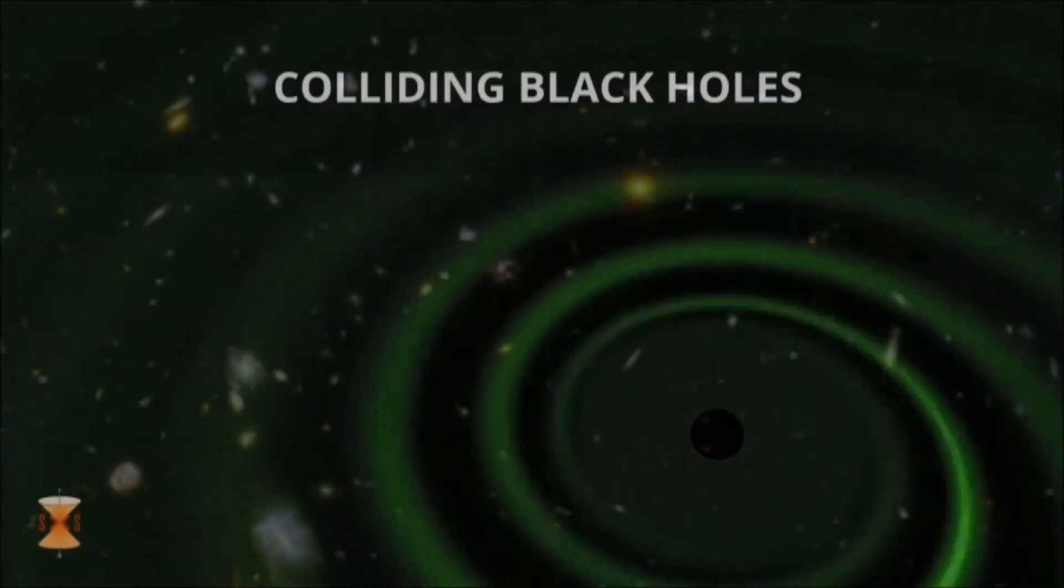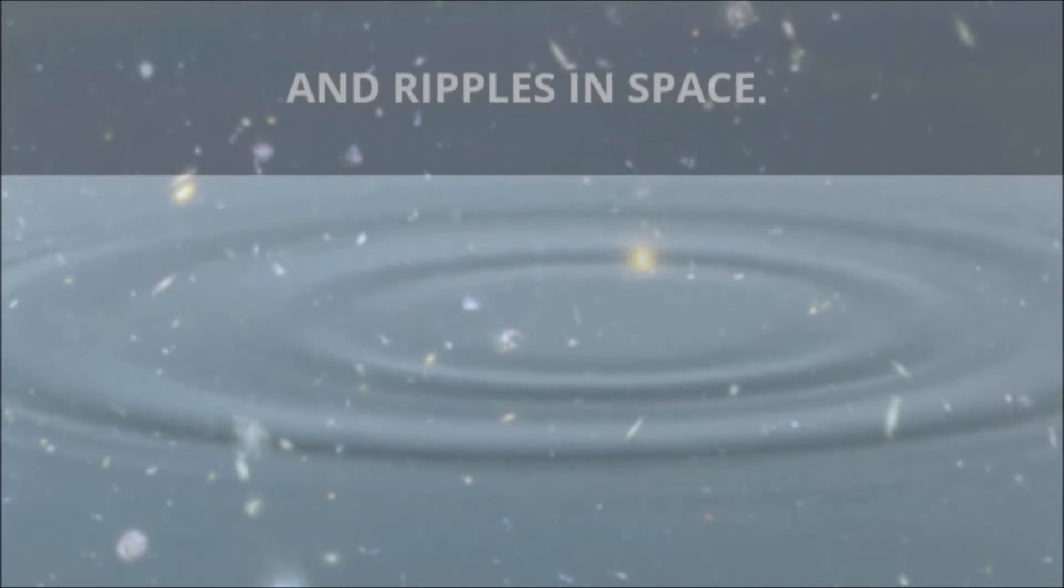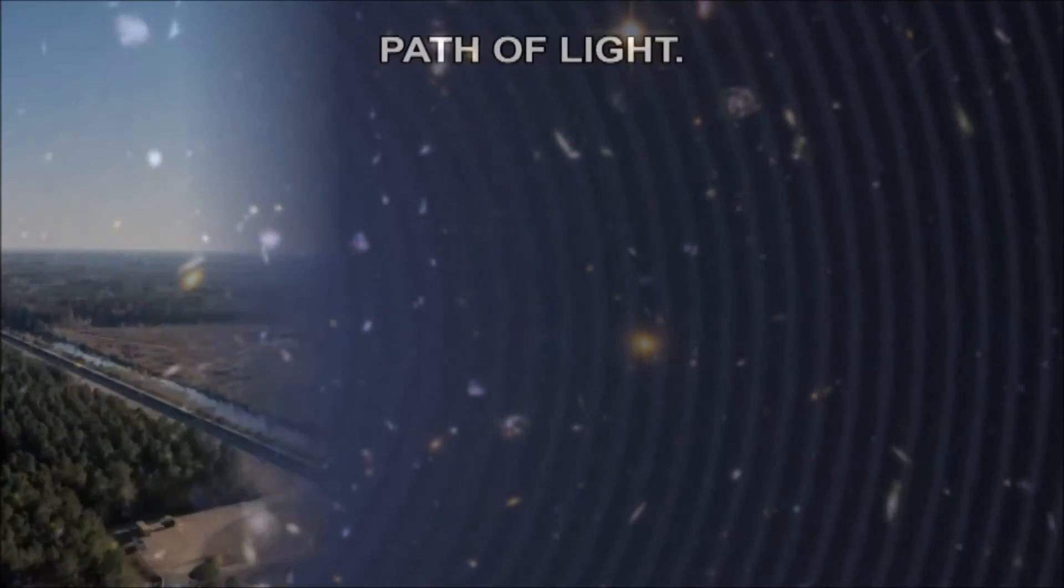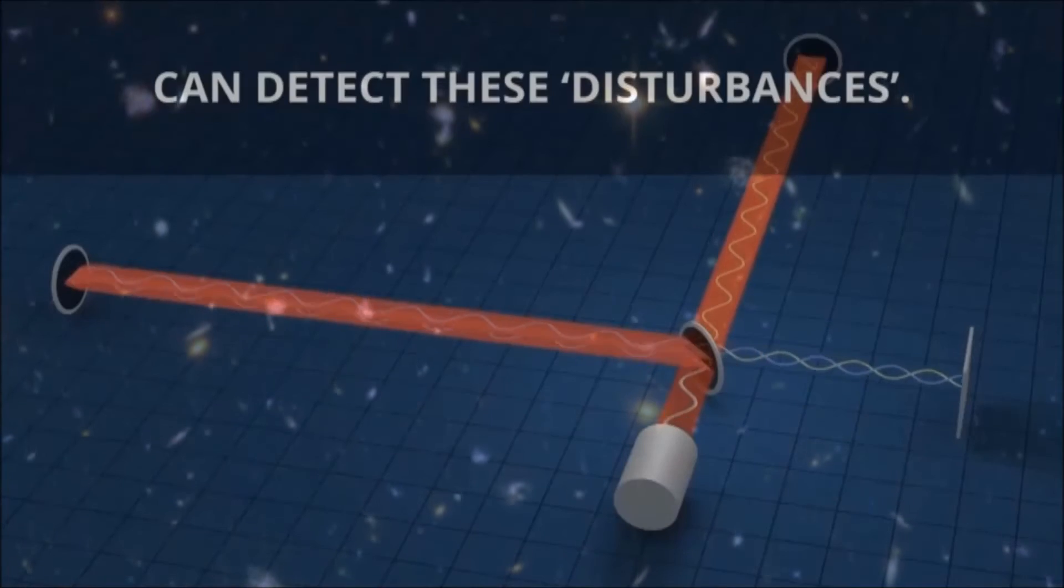Stars, exploding stars, colliding black holes—these all are sources of pressure waves and ripples in space. They travel through space and can make disturbances in the path of light. An instrument like LIGO can detect these disturbances.